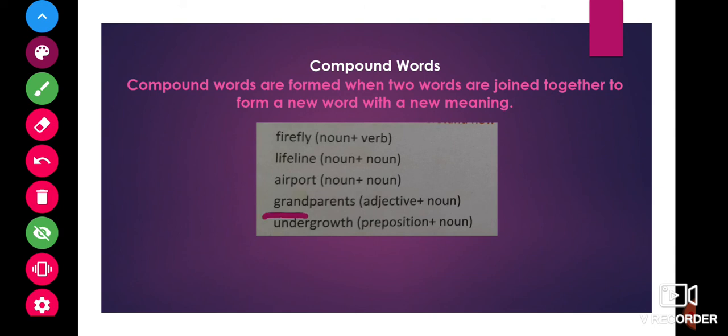Grand is an adjective. Parents is a noun. Grandparents is a compound word. Under is a preposition and growth is a noun. Undergrowth is a compound word.